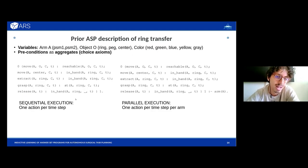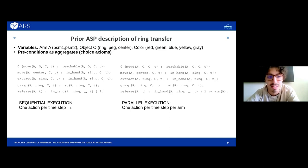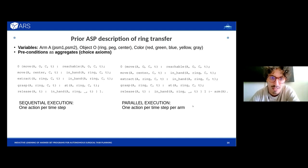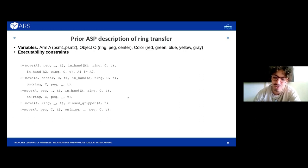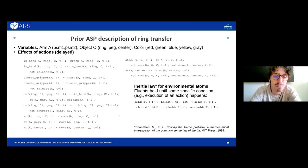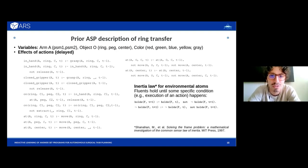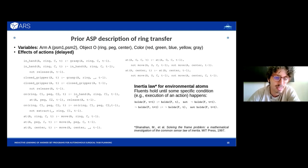We start by providing a handwritten prior formalization of the specifications for this task. For the preconditions of actions we define them in two ways, considering two variants: sequential execution, where one action per time step is allowed, and parallel execution, where one action per time step per arm is allowed, enabling faster task execution. We also have executability constraints on actions and the effects of actions, which account for the law of inertia — environmental variables keep holding until specific events or actions occur. We insert a temporal delay between actions and their effects to account for the temporal sequence of the task.